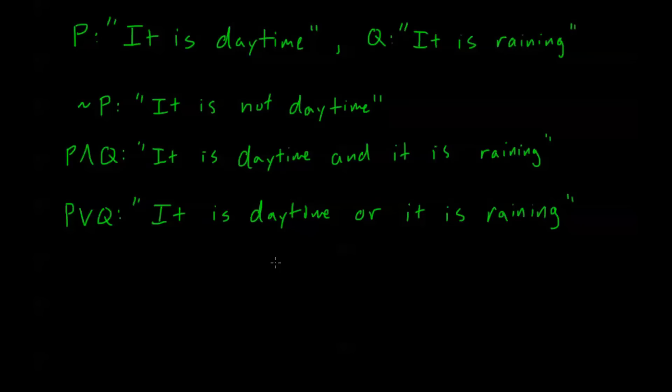Now, I need to make some clarification here with this last one, P or Q. This statement, it is daytime or it is raining, this or is a mathematical or. Sometimes in English, we use or to mean it's one of them or it's the other one, but it's not both of them. Now, in logic and mathematics, what or means is it's the first one, or it's the second one, or it's both of them. So, P or Q is the same thing as P or Q or P and Q. These are equivalent statements.